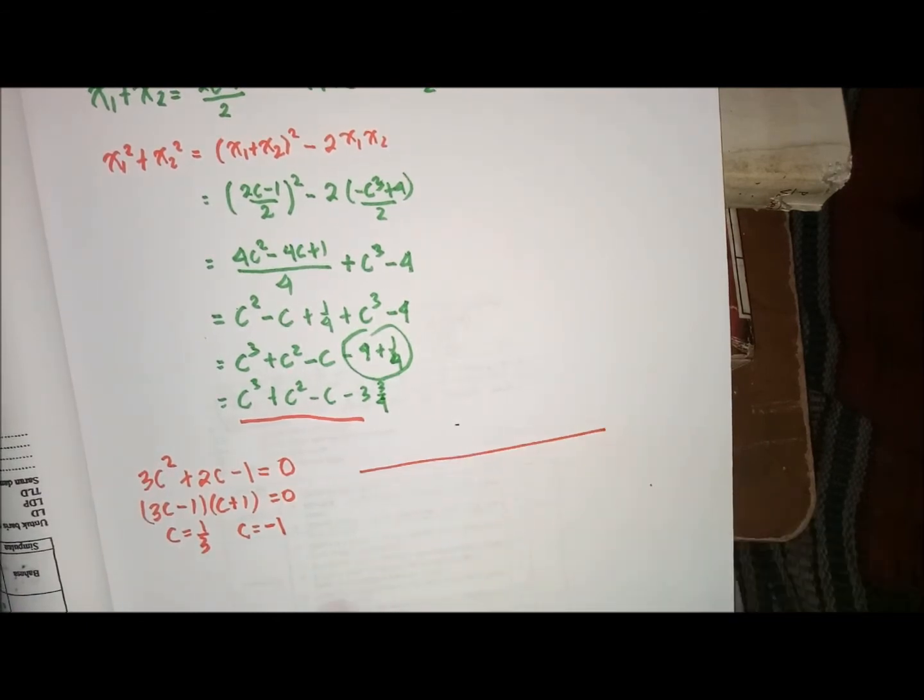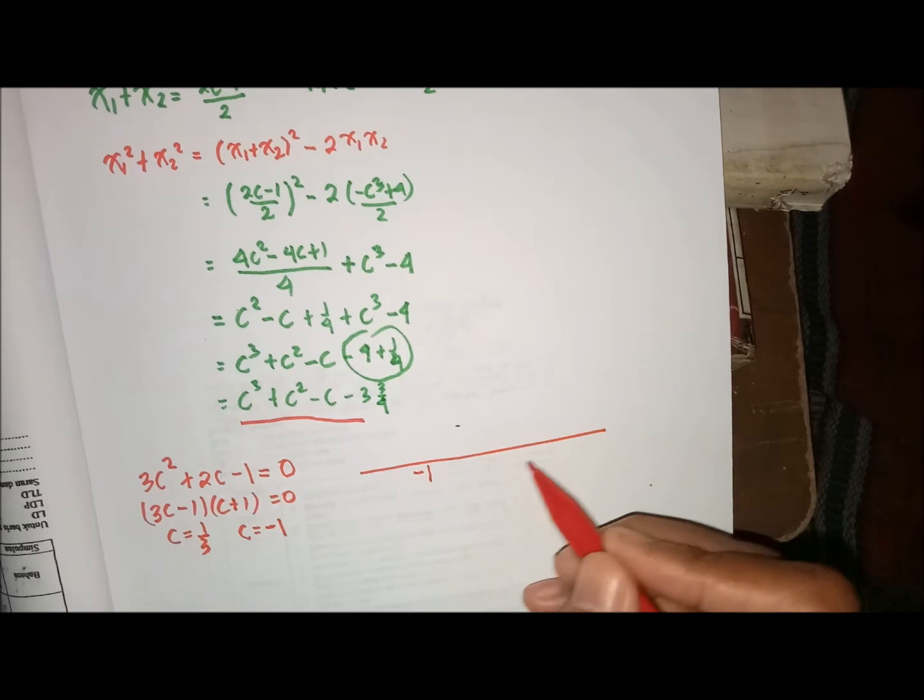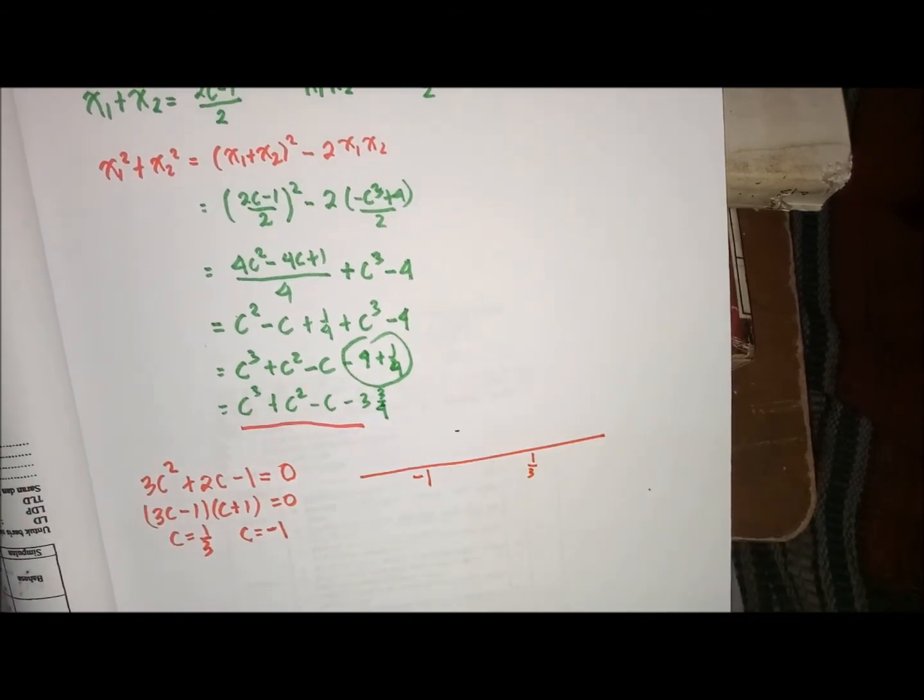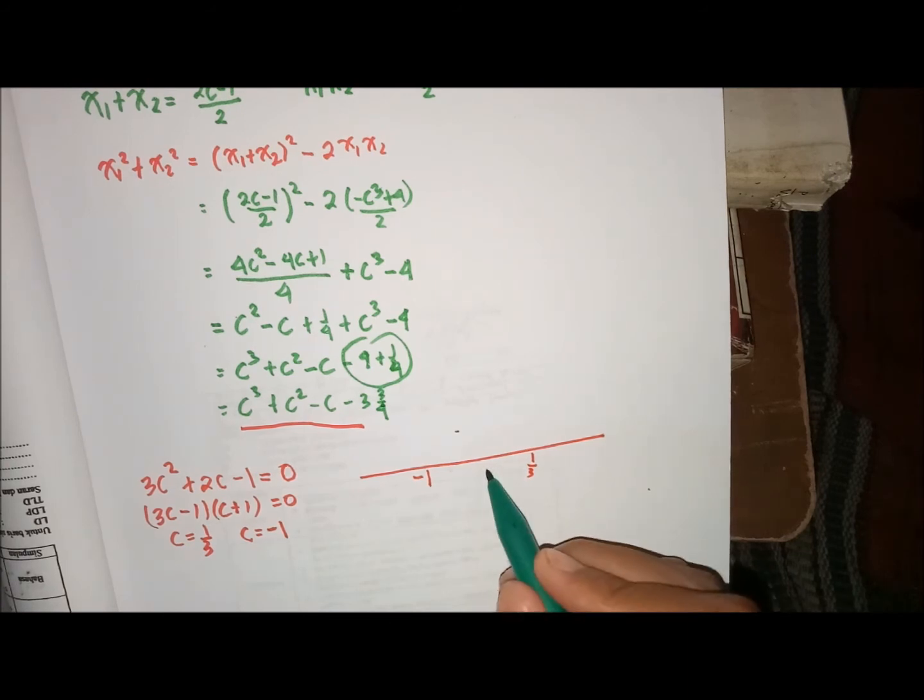Kita gunakan garis bilangan. Di sini ada min 1, ada 1 per 3. Kemudian nilai 0 itu di tengah, di sini 0.